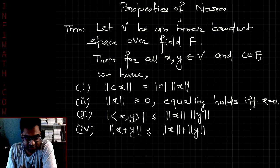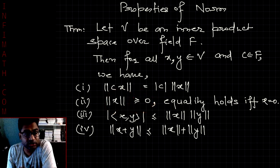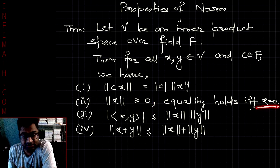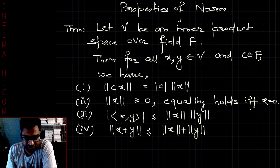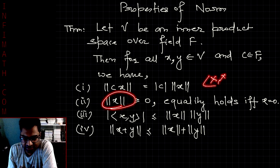The second property states that the norm of x will always be greater than or equal to zero, and equality holds if and only if x equals zero. We can see that if we translate this, we will get the square root of the inner product ⟨x, x⟩ ≥ 0.